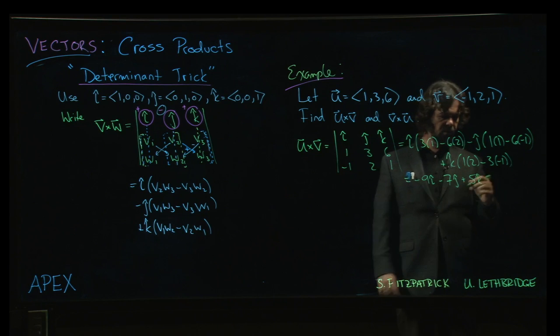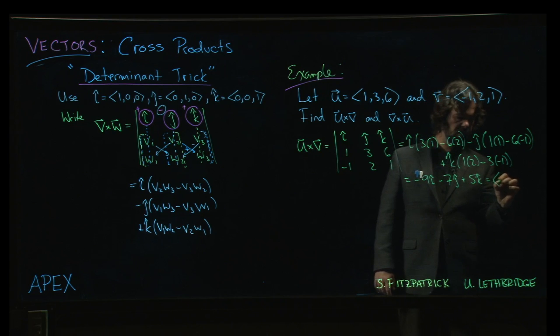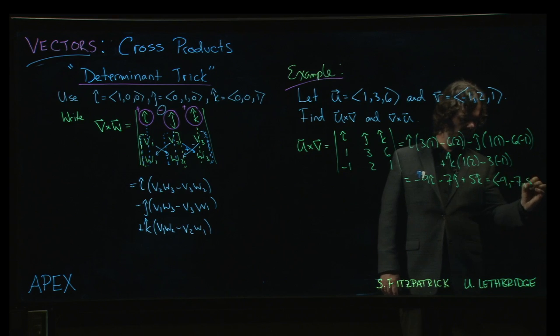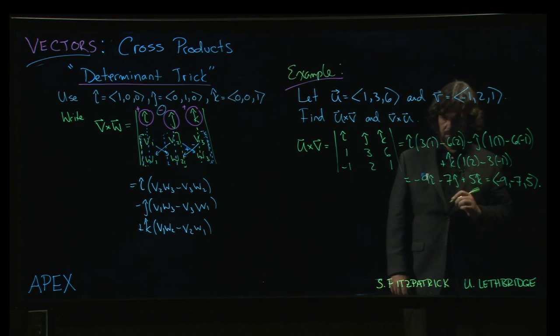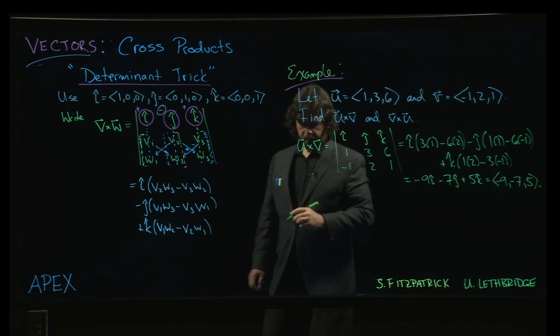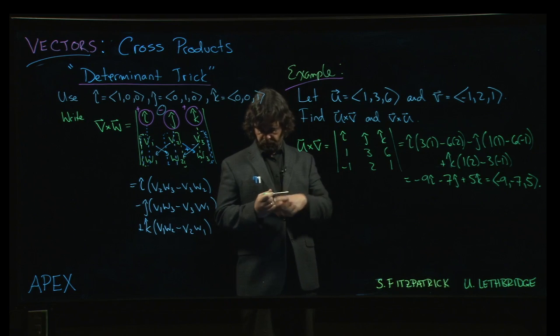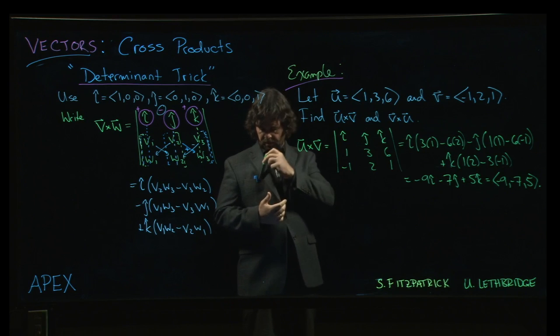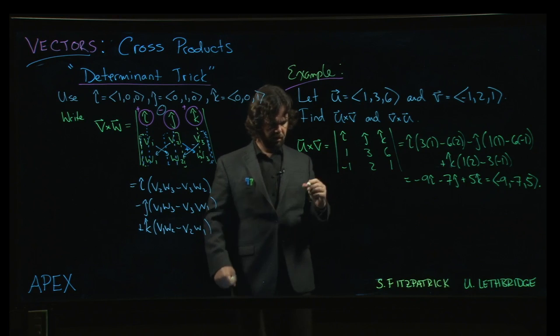You can leave it like that in terms of i, j, k. If you prefer the angle bracket notation, minus 9, minus 7, and 5. Alright, now the question also asks us to do things the other way around. So let's go for it.